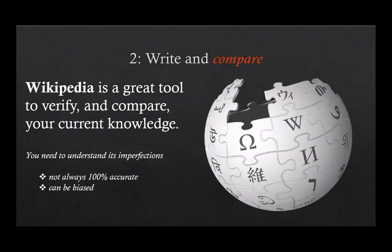The second part of writing and compare is to compare — to look at what you wrote. Let's say you want to talk about the DNA molecule and you write everything you know about it. Then you need to compare with a source in order to identify what you forgot to write or didn't know you should have written. Wikipedia is a great tool to verify and compare your current knowledge. There's a lot of information on Wikipedia, but let's keep in mind that it's not always 100% accurate and it can be biased.